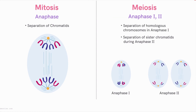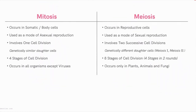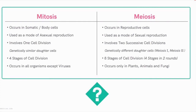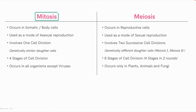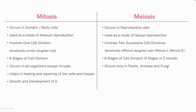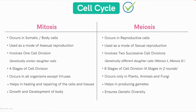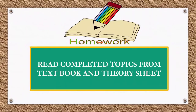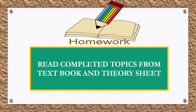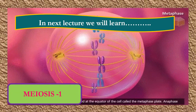Let's summarize the major differences between mitosis and meiosis. Mitosis helps in the healing and repairing of cells and tissues of our body and is responsible for growth and development. Meiosis helps exclusively in producing gametes, ensuring genetic diversity. With this we come to an end of the concept of the cell cycle. In the next lecture we will learn meiosis one — so till then, goodbye.